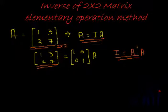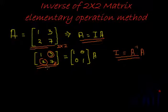To convert the matrix into an identity matrix, we need to make the non-diagonal elements zero and the diagonal elements one. We look at the given matrix and determine which elementary row operations will yield the desired result. The first elementary operation we will perform is on row 2.